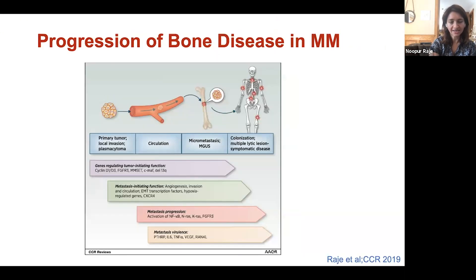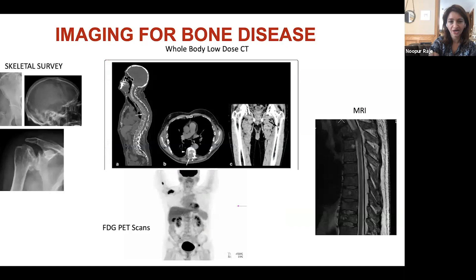As has been pointed out, multiple myeloma starts out in the bone marrow, and there's a reason why multiple bones can get affected. These cells migrate to different bones, form clusters in different bones, and this is representative of the lytic bone disease that Dr. Gertz was referring to.